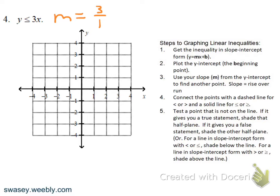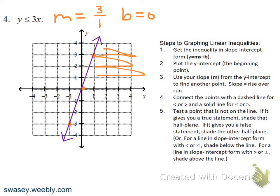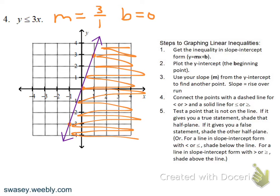Here the slope is three over one and the y-intercept is zero. Plot a point at the origin, then go up three to the right one — you could also go down three to the left one. This one is a solid line. Since it's less than, we shade below. If you're having trouble seeing above or below, use a test point: if it gives a true statement, shade that half-plane; if false, shade the other.